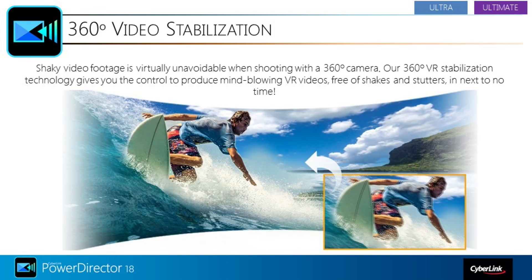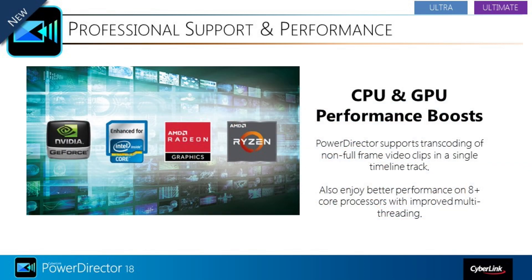Do you shoot 360-degree video? If so, you know it can be shaky. PowerDirector 18 now includes 360-degree VR stabilization to help make your videos less jittery. PowerDirector 18 also features improvements to its processing engine to improve your editing and rendering performance, particularly if you have newer, more powerful computers. It supports transcoding of non-full-frame video clips in a single timeline track and increases performance on 8-plus core processors with improved multi-threading.